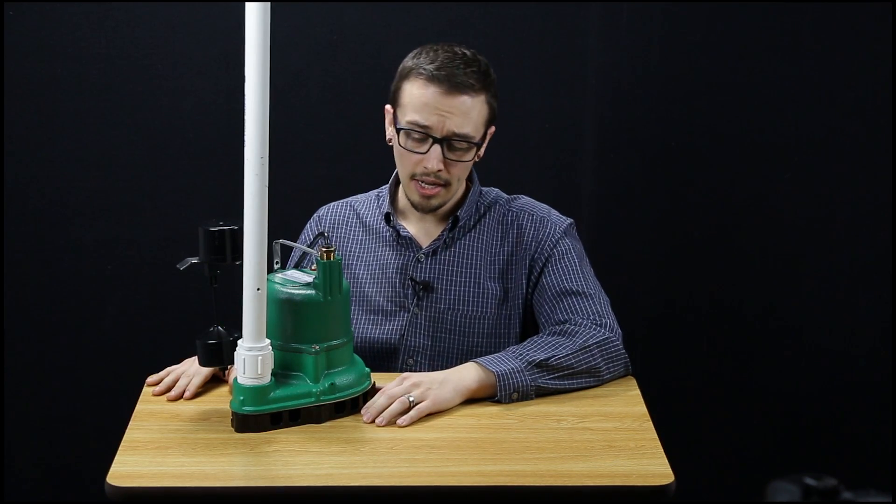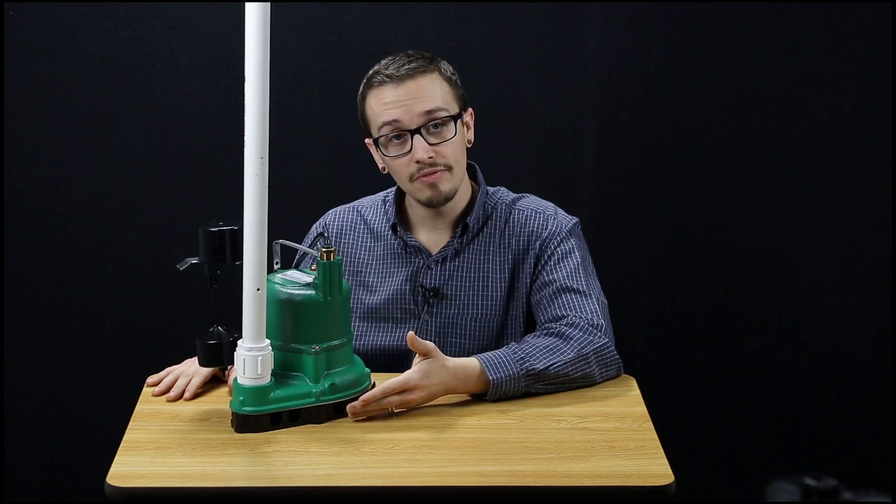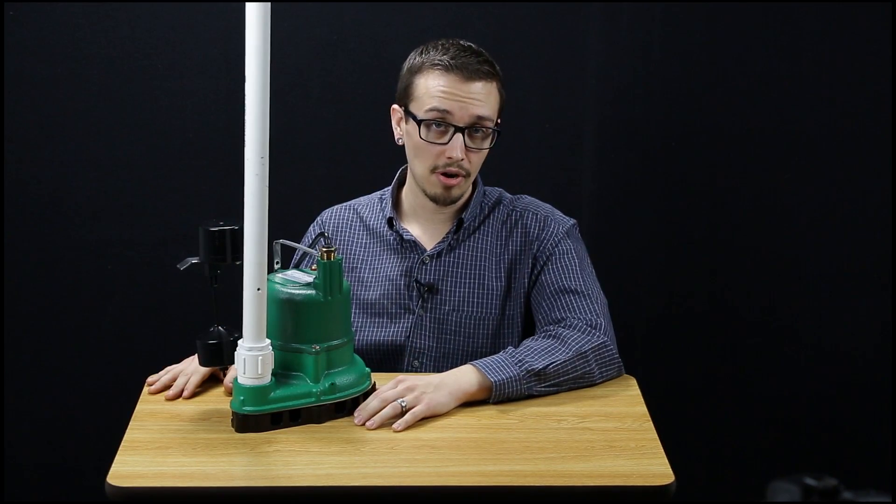When you run into a situation where you've got a sump pump that doesn't have the built-in vent, you're going to need to drill your own, and that's very simple. When you drill your own vent hole, I typically recommend drilling the hole in the discharge pipe about three to four inches above the pump discharge connection.